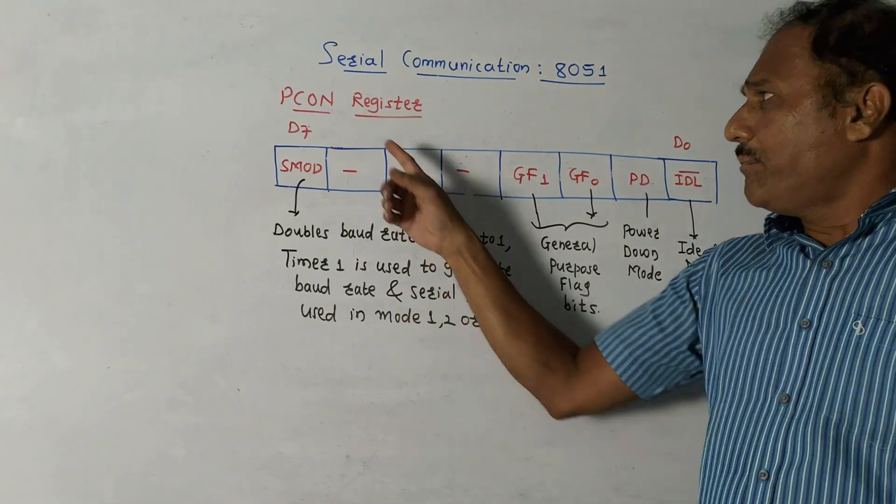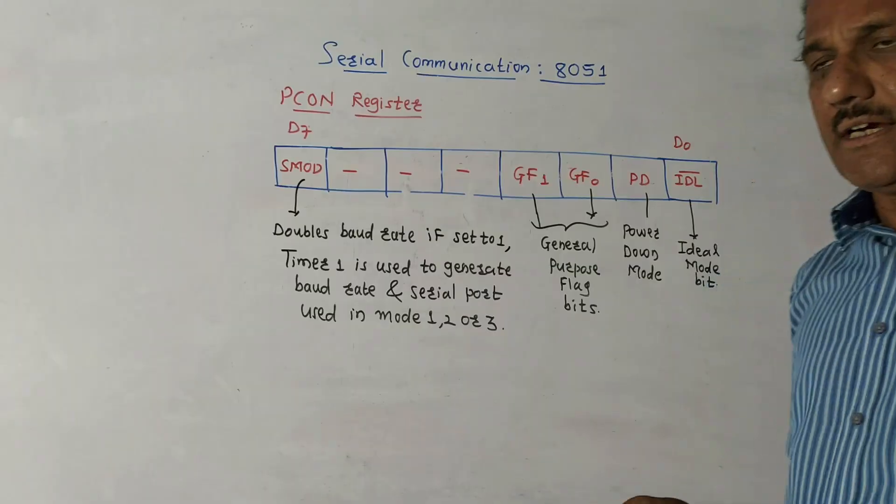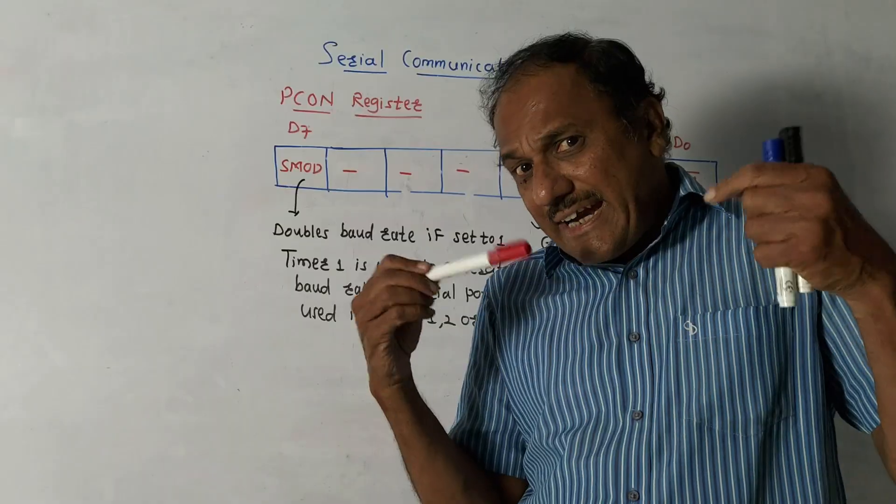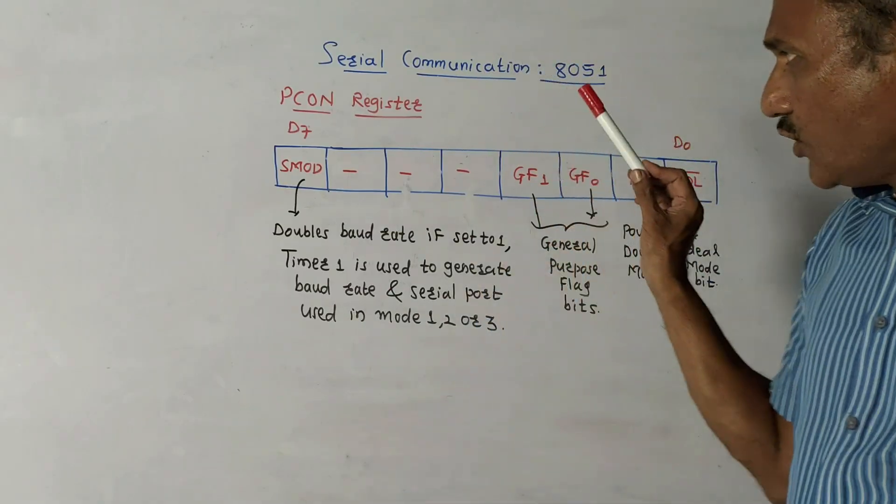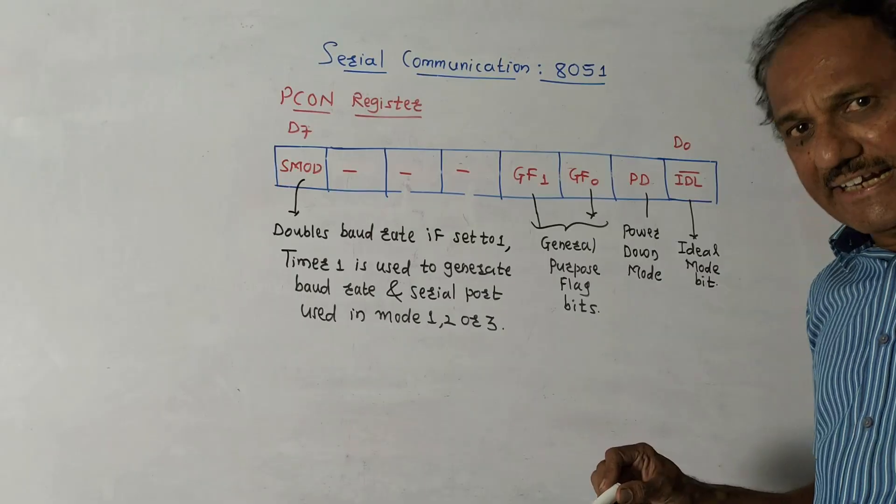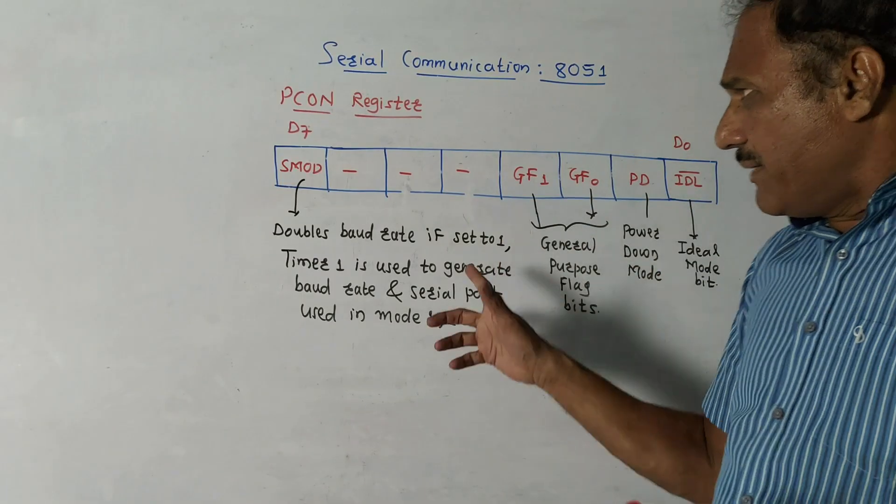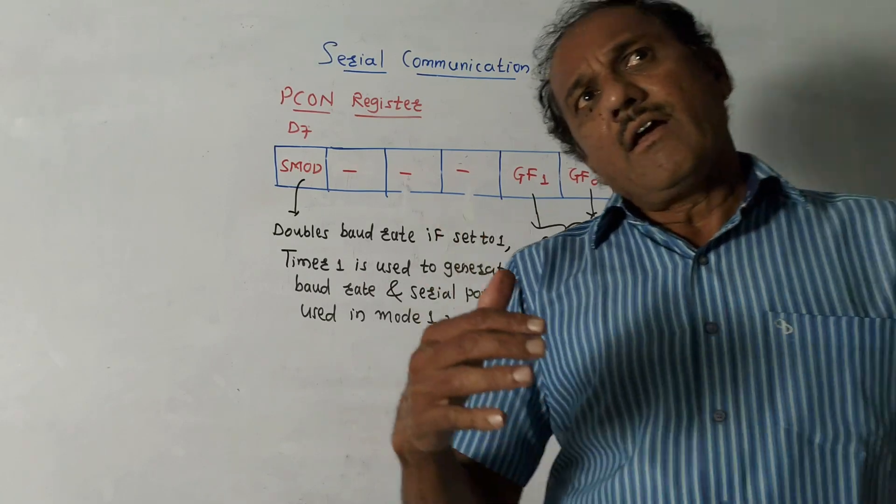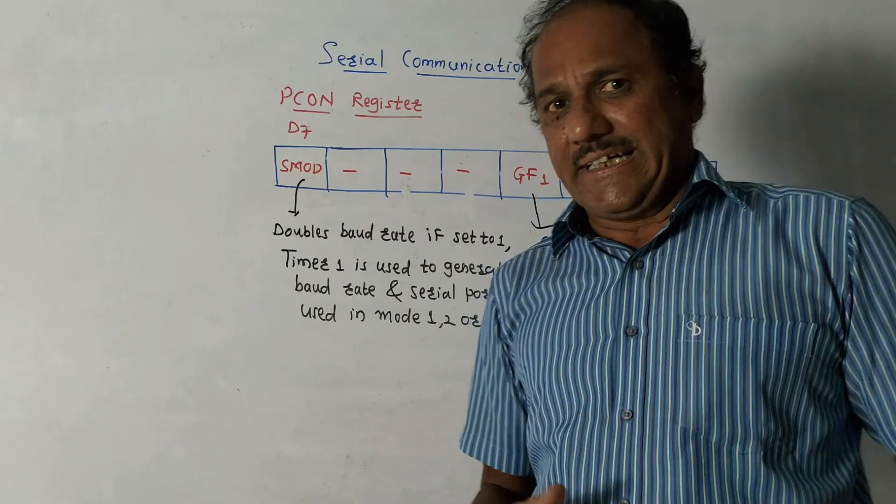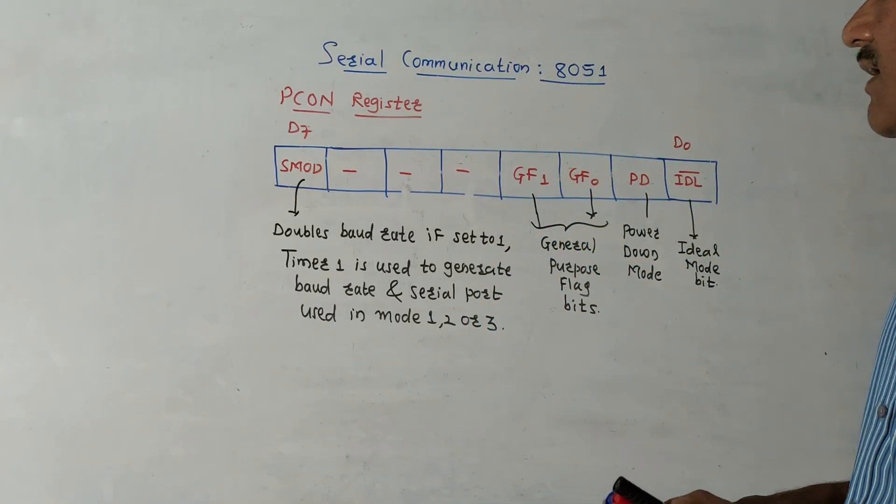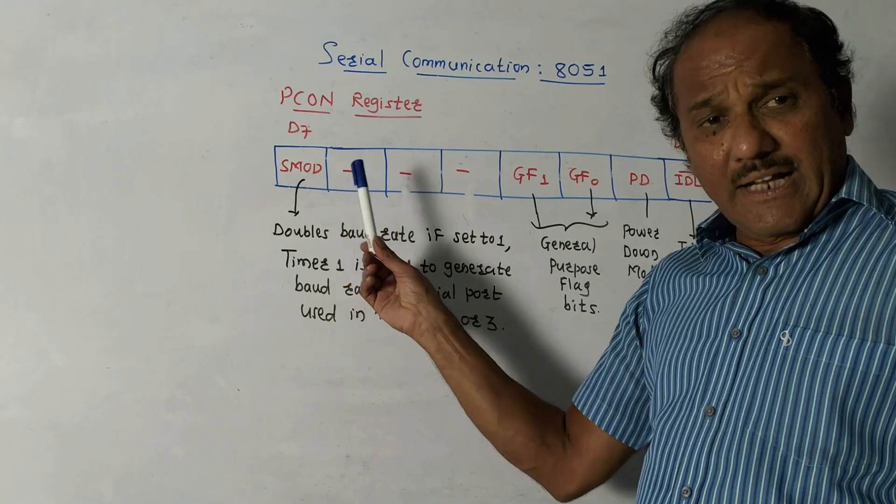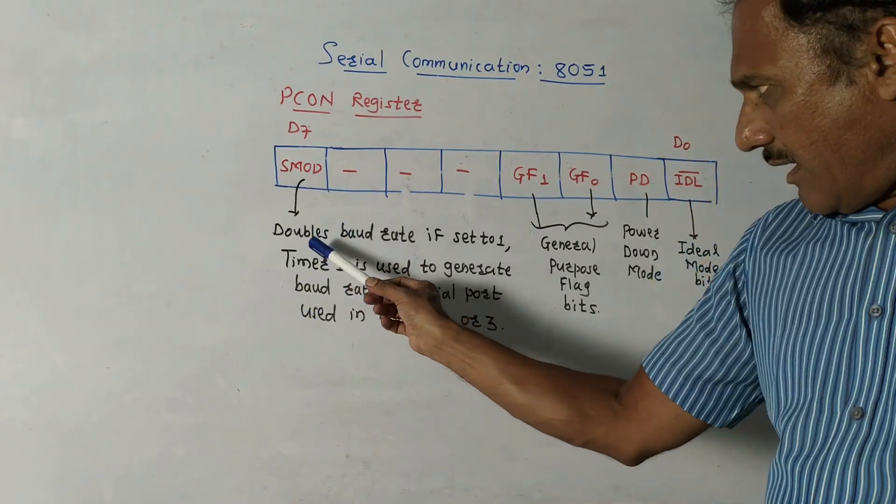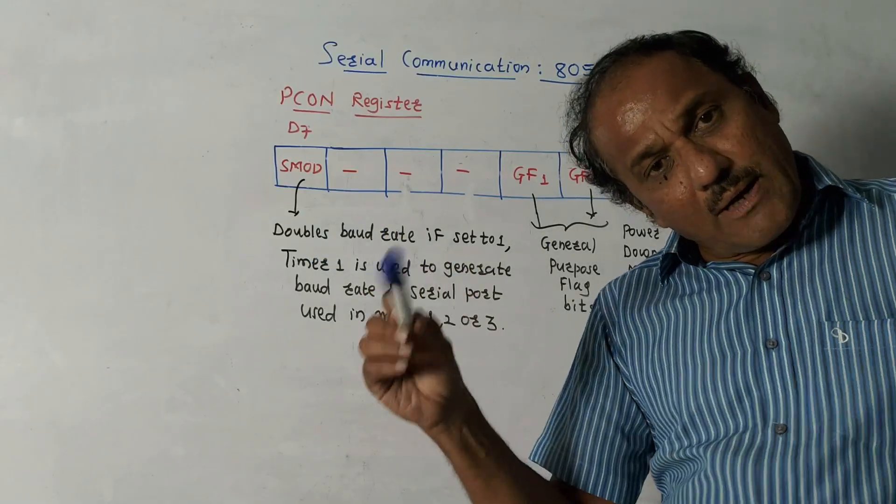The next is PCON register, that is power control register. Earlier registers we discussed were bit addressable. This is not bit addressable, rather it is byte addressable register. As the name indicates, it is performing the power controlling action. Basically it is used to control the baud rates of data communication. The D7 bit, that is MSB bit, is most important. It is SMOD bit. I have written the explanation. It is basically used to double the baud rate of transmission.